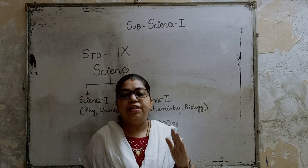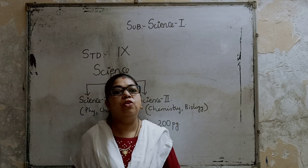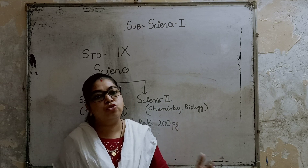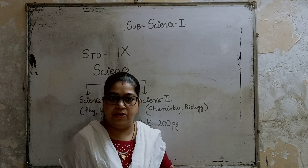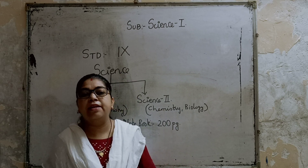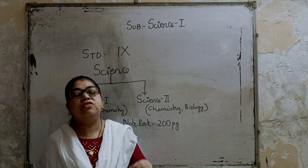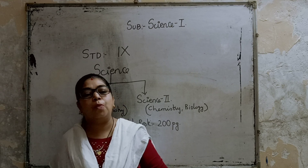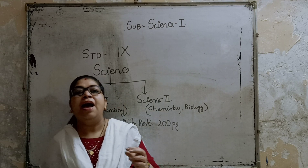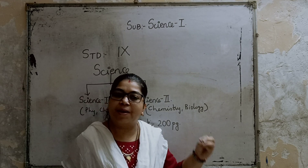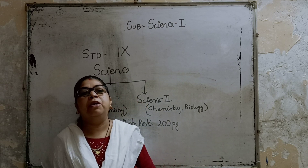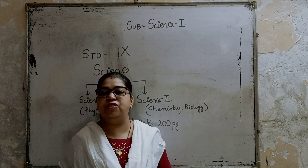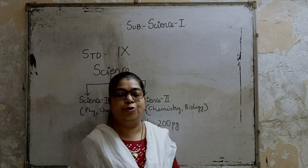For Science 1, you will purchase a 200-page notebook, and for Science 2, you will also purchase a 200-page notebook — separate notebooks for each subject. Now let's begin with our first chapter, Laws of Motion.